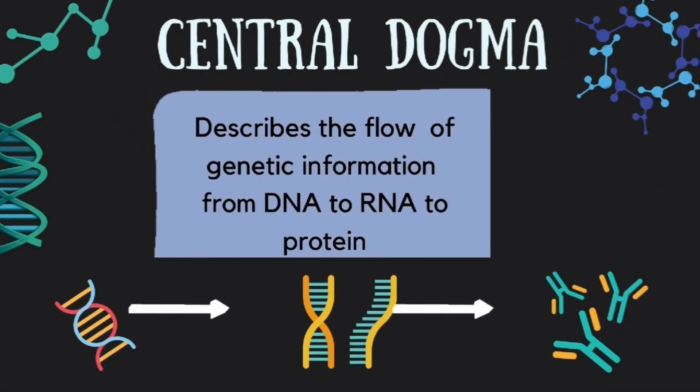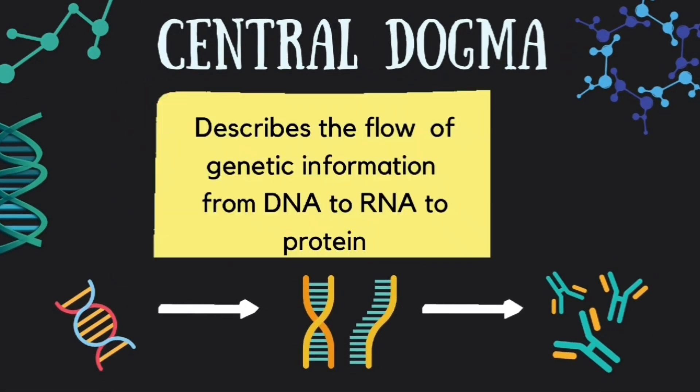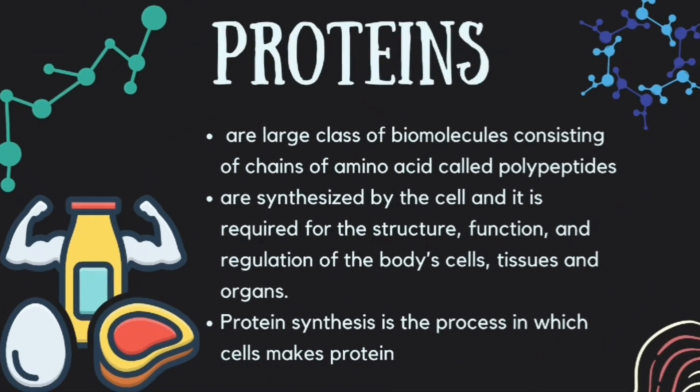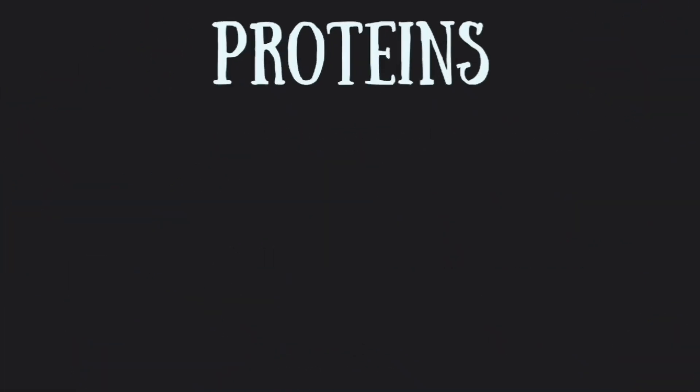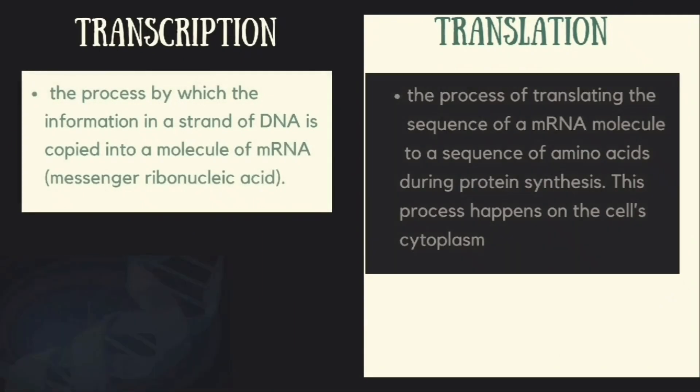What is central dogma? It describes the flow of genetic information from DNA to RNA to protein. Proteins are a large class of biomolecules consisting of chains of amino acids called polypeptides. They are synthesized by the cell and are required for the structure, function, and regulation of body cells, tissues, and organs.